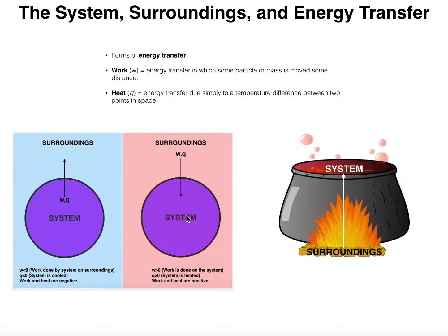For this example, whether we're dealing with heat or work, anytime energy is being added to the system — in other words, energy is moving from the surroundings to the system — those types of energy, by definition, have a positive value. If heat (Q) is being added to the system, the value of heat is positive. If work is being done on the system, that work has a positive value. Any energy added to the system, or done on the system, has a positive value. When work is positive, work is done on the system; when Q is positive, thermal energy is being added to the system.